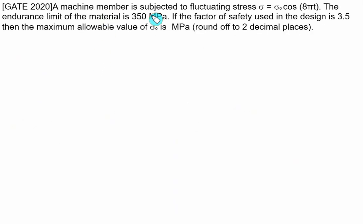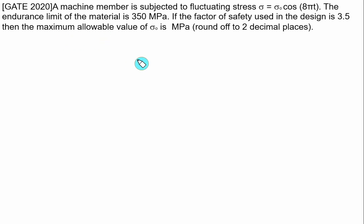A machine member is subjected to fluctuating stress given by sigma equals sigma₀ times cosine of 8π times T. The endurance limit of the material is 350 MPa. If the factor of safety used in the design is 3.5, we have to find the maximum allowable value of sigma₀ in megapascals.